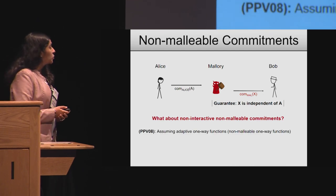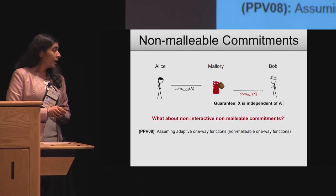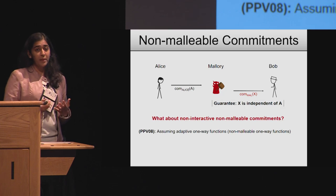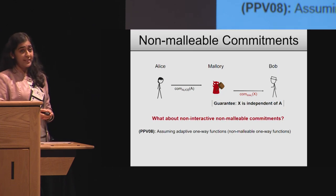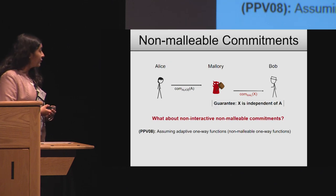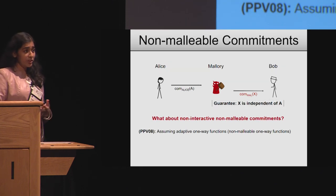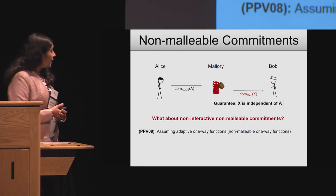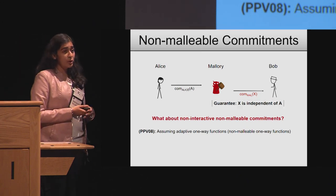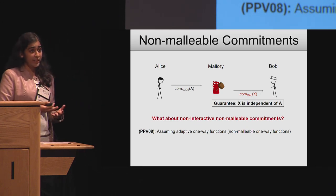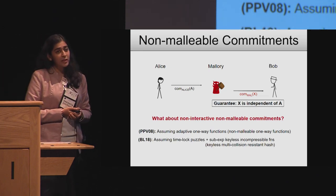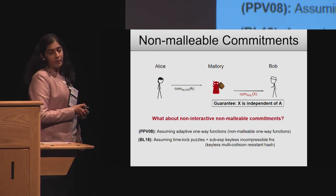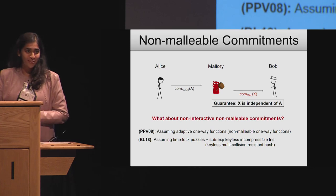Towards answering this question, there was a work that showed that if one assumes the existence of adaptive or non-malleable one-way functions — which is a very strong assumption on one-way functions — then indeed non-interactive non-malleable commitments do exist.